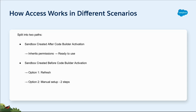Access depends on when the sandbox was created. If it was created after CodeBuilder was activated in production, you are all set. If it was created before, you will either need to refresh the sandbox or follow a few steps: admin access, accept terms and conditions, install CodeBuilder, and then assign permissions. This ensures access without disrupting existing work in the sandbox.